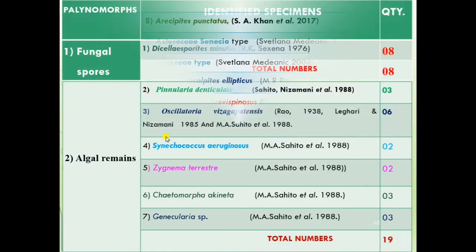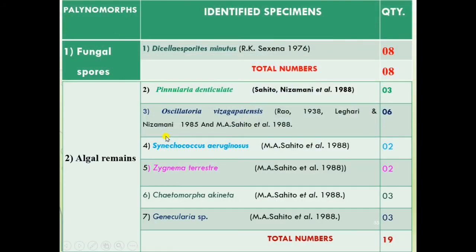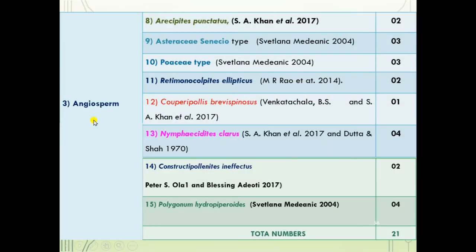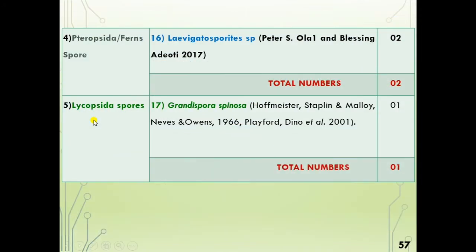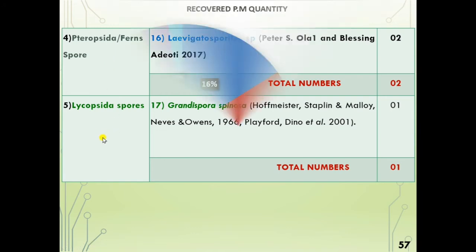This slide shows the identified specimens and their quantity: fungal spores, algal remains, angiosperms, fern spores, and Lycopsida.